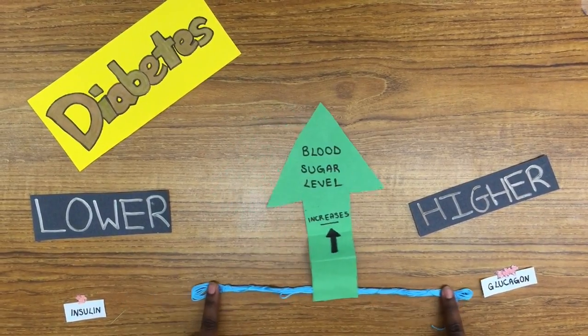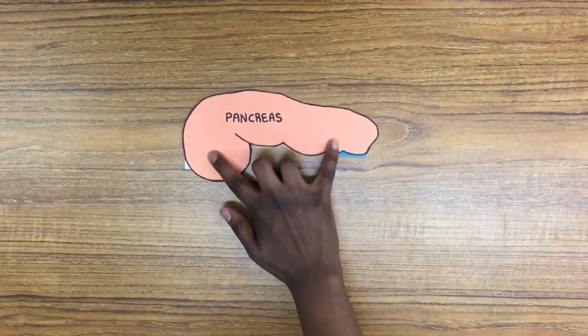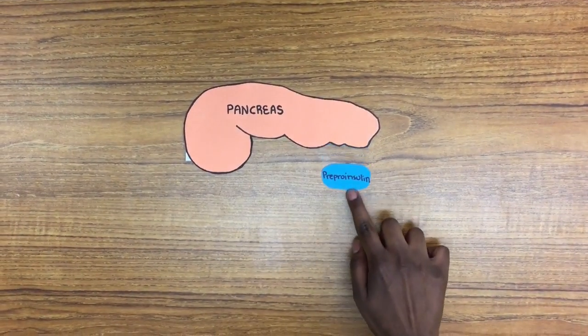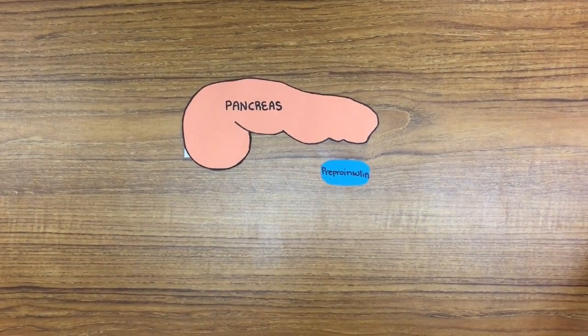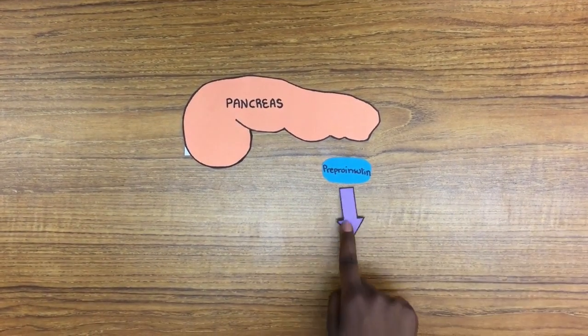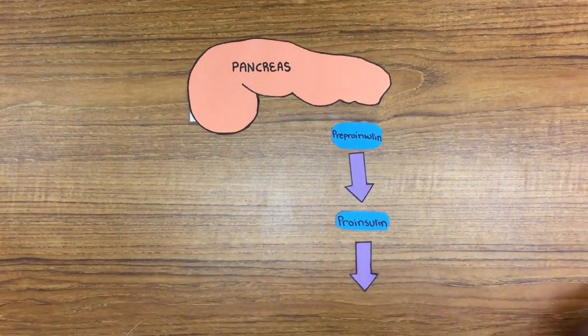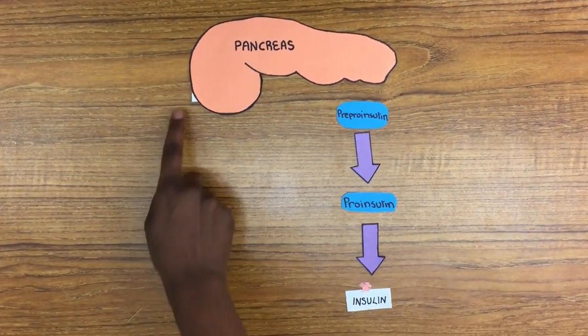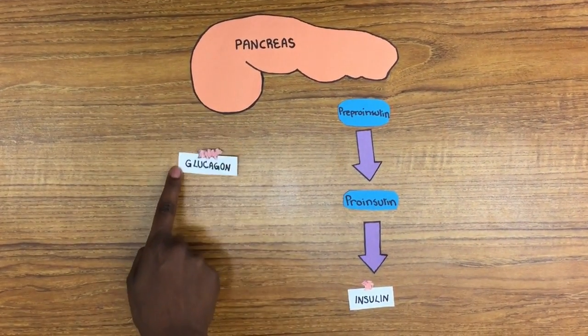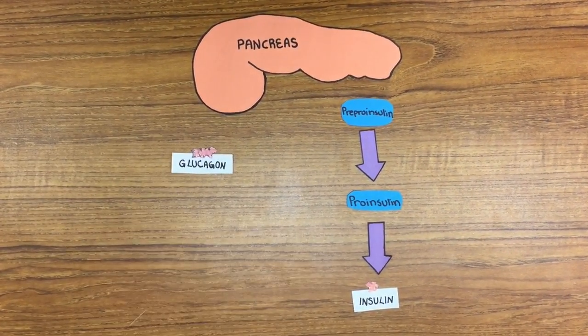The synthesis of insulin begins with a precursor, pre-proinsulin, which is produced in the beta cells of the pancreas. It is converted to proinsulin and then mature insulin. Glucagon is produced in the pancreatic alpha cells.